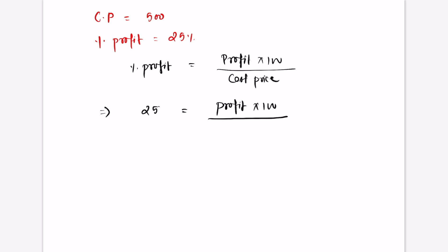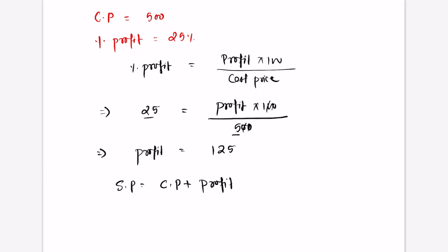We multiply 25 by 500 and divide by 100. The 100s cancel, giving us profit equal to 125. So profit is 125. Selling price is cost price plus profit: 500 plus 125 equals 625 rupees.